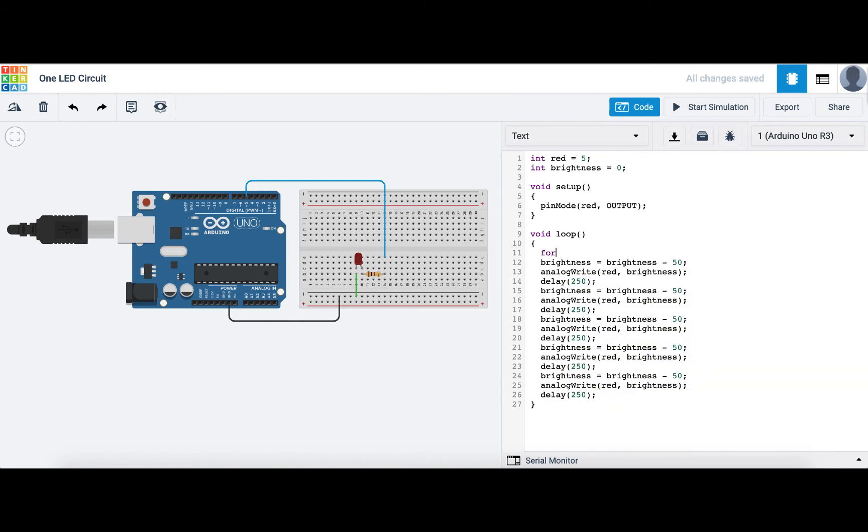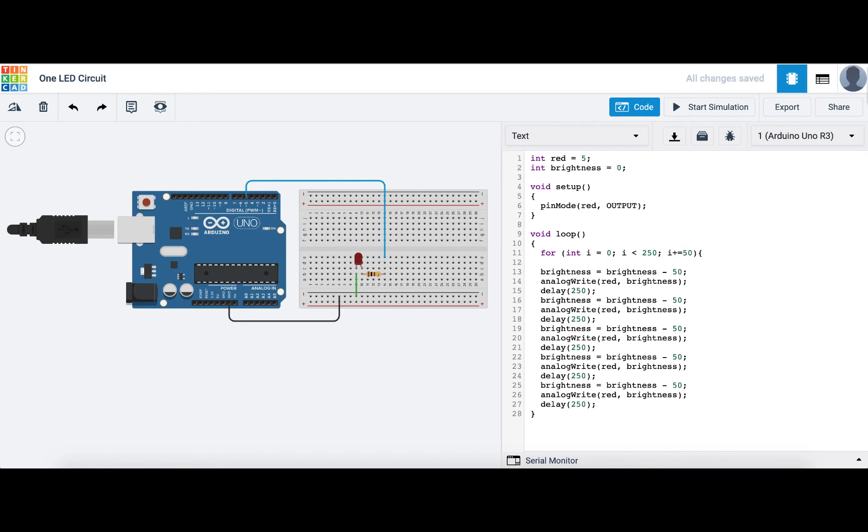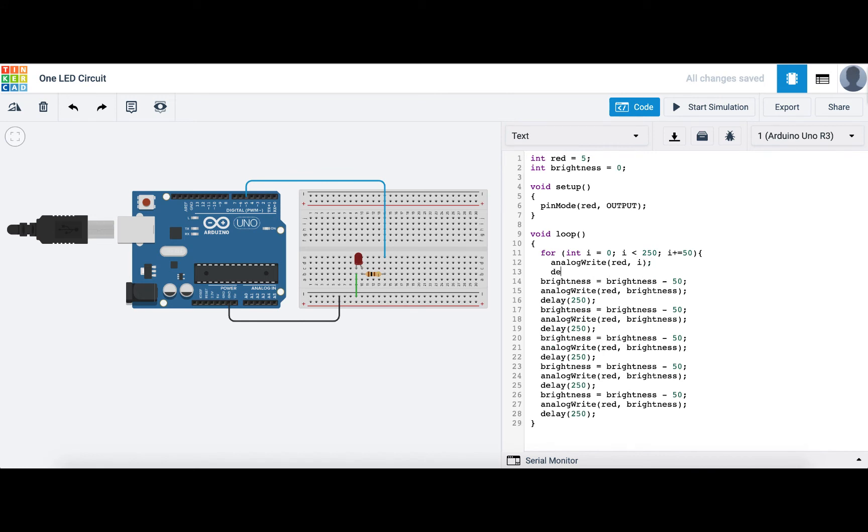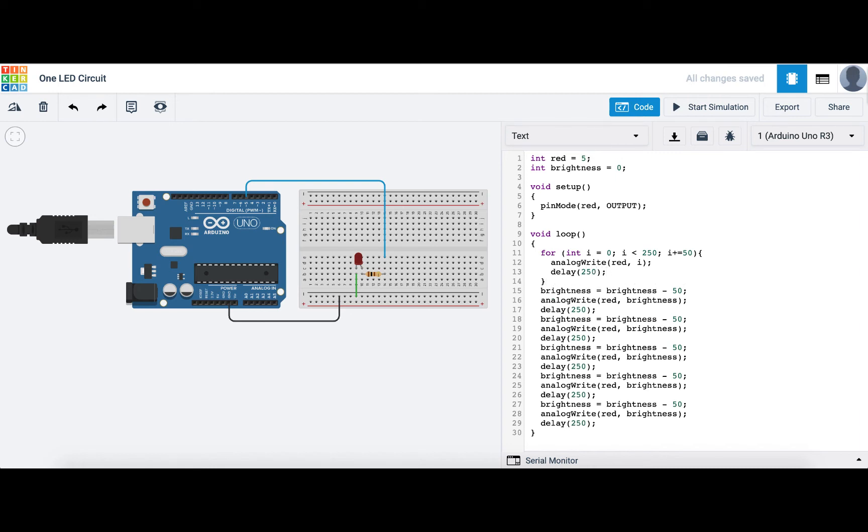We can write for int i equals 0, i is less than 250, i plus equals 50, and we want to write to our red LED the value of i. Then we want to wait a quarter of a second, and we close our curly brace. Let's see how that works. Awesome!